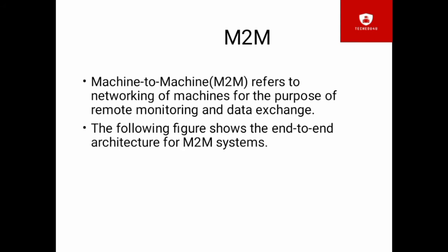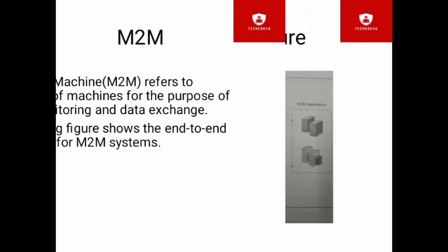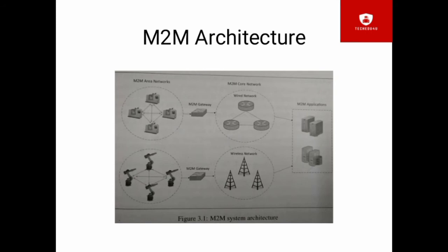It can monitor data and data exchange also. The following figure shows the architecture of M2M - mission to mission architecture. Here mission to mission has the local area networks and all those things. The M2M area networks, core networks, M2M gateway, and M2M application. Each M2M network comprises of missions which have embedded hardware for sensing or activating and communication.